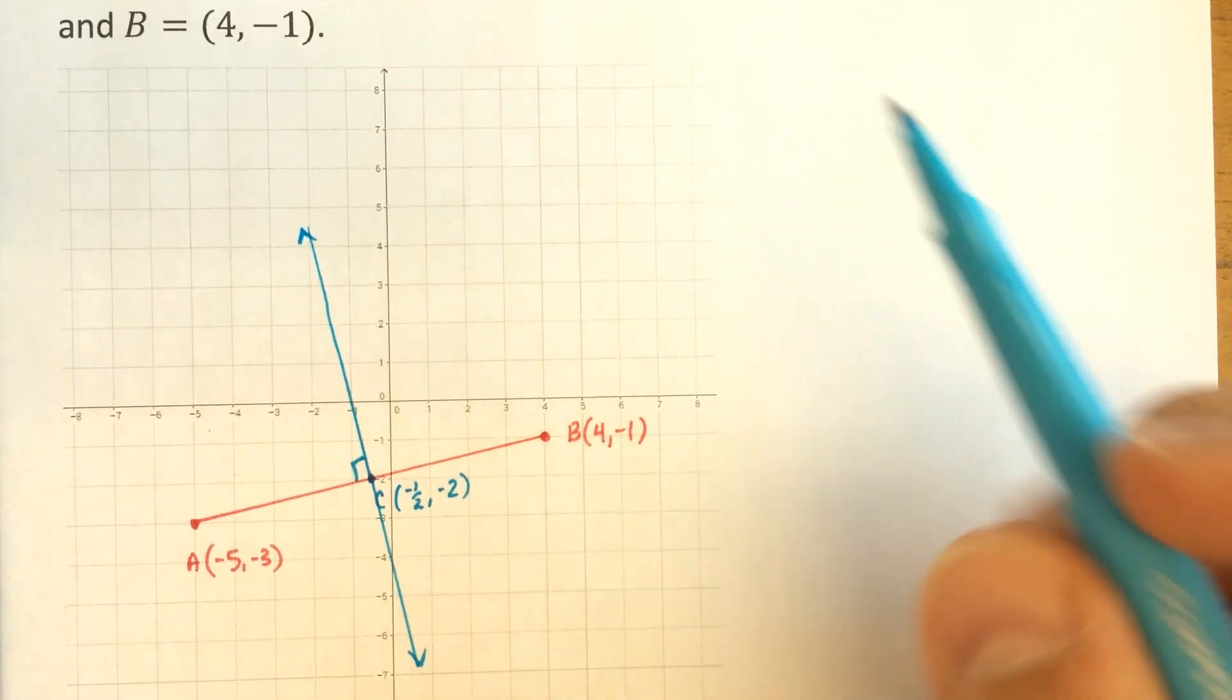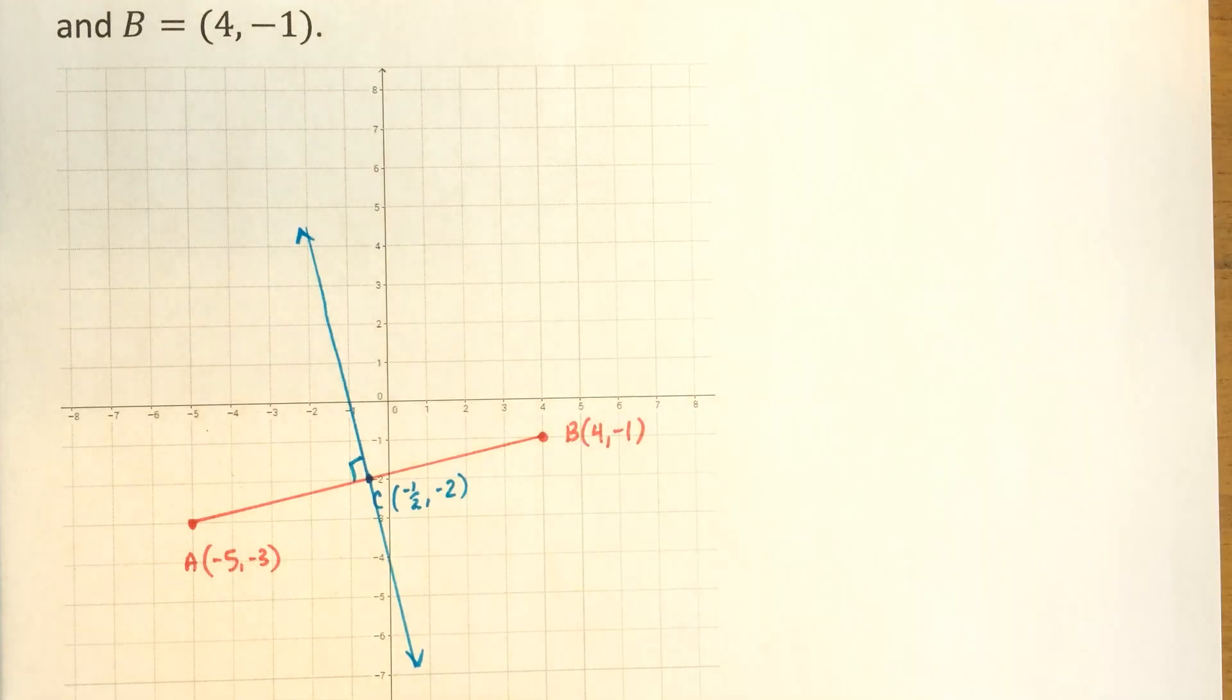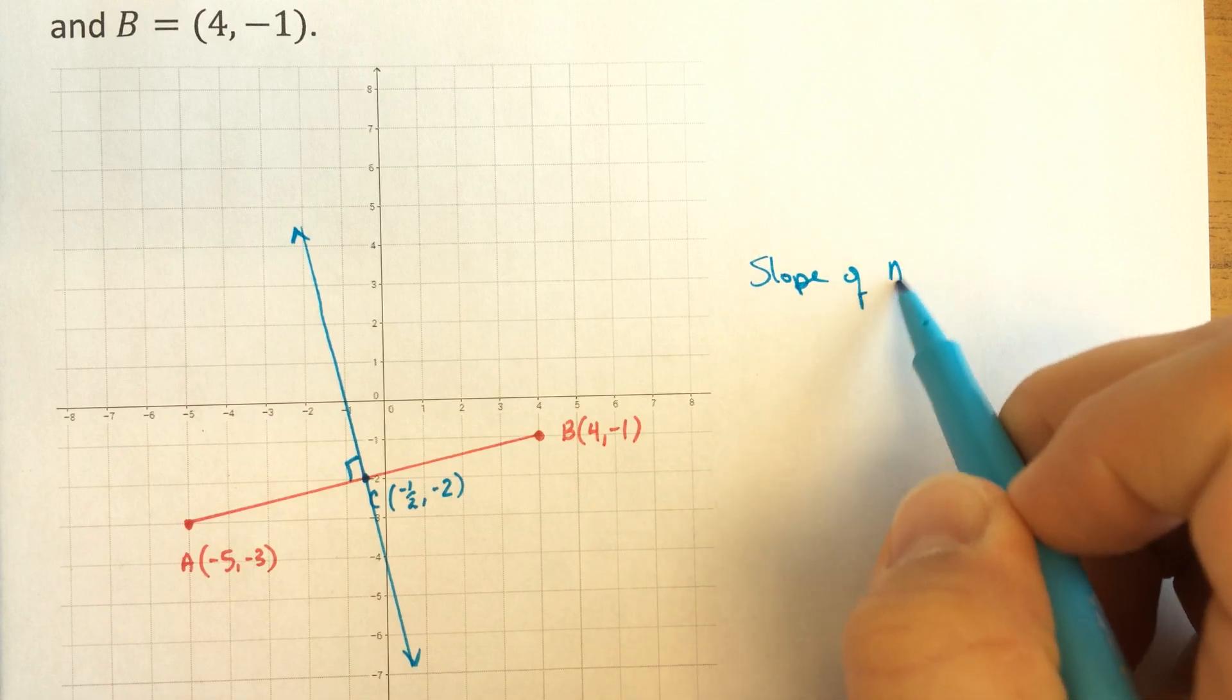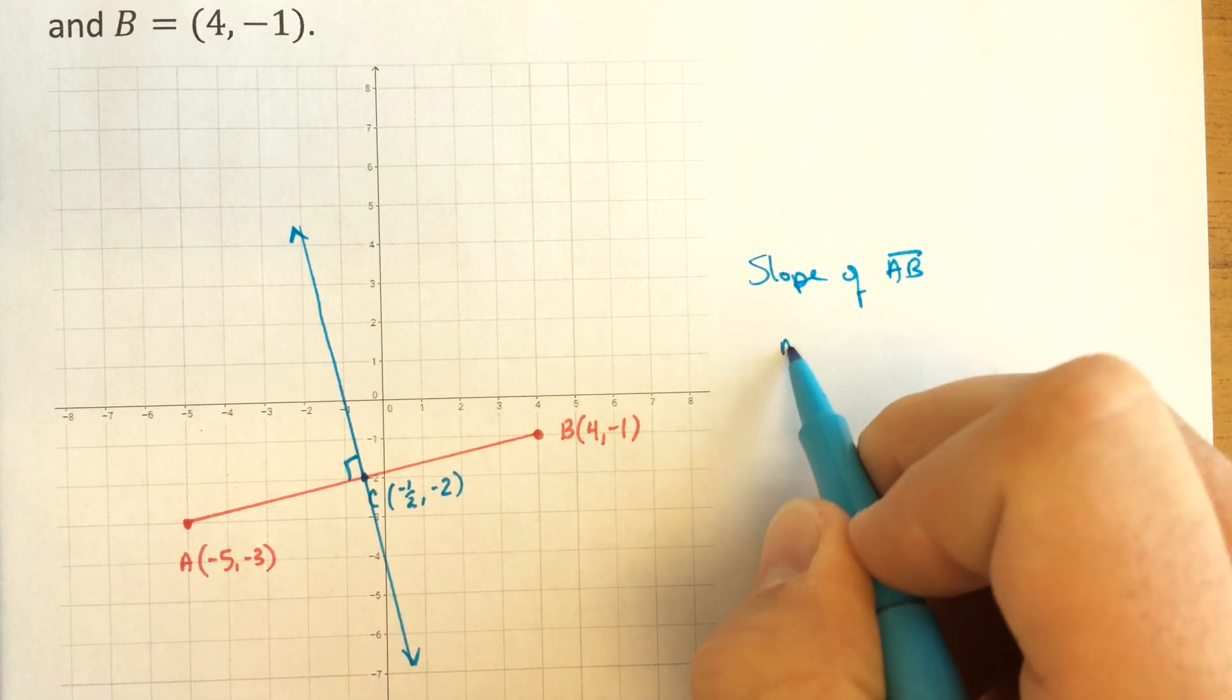We have to know a couple things. Finding the perpendicular bisector means to find the equation. Let's see what we already know. We already have the slope of segment AB. I'm going to call that M1.